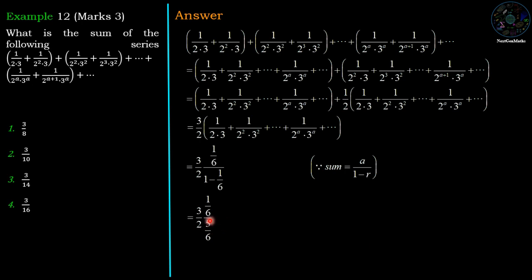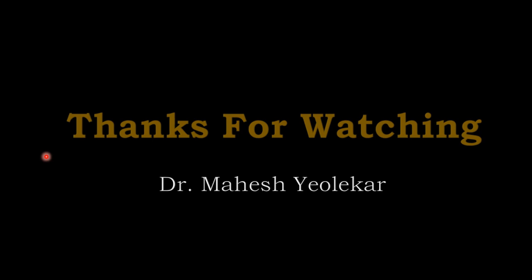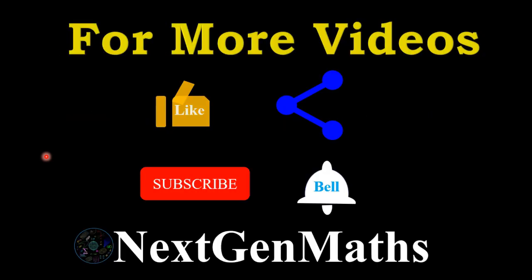The 6s cancel, then we have 3/10, which is option number 2. So option number 2 is the correct answer. Thanks for watching. For more videos, like, share, subscribe, and please press the bell icon of Next Gen Maths.